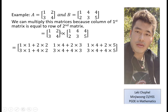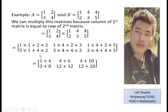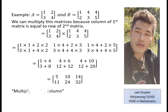For the first element: 1×1 + 2×2 = 1 + 4 = 5. Then 1×4 + 2×3 = 10. Then 1×4 + 2×5 = 14. For the second row: 3×1 + 4×2 = 11, then 3×4 + 4×3 = 24, then 3×4 + 4×5 = 32. So the product matrix is [5, 10, 14; 11, 24, 32]. You multiply row by column for each entry.